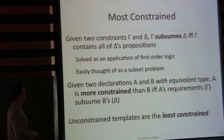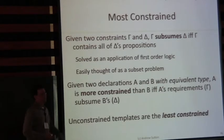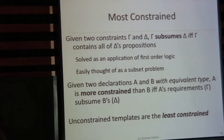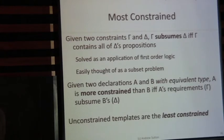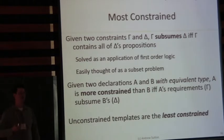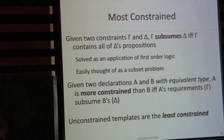We say gamma subsumes delta if and only if gamma contains all of delta's propositions. This is really an application of first-order — sorry, propositional — logic. You can really think of this as a subset problem: if there's no disjunction, it just is a subset problem. More broadly, if we have two declarations A and B with equivalent type, A is more constrained if its requirements gamma subsume those of B, delta. Unconstrained templates are always the least constrained, which is why requiring true gives you something more constrained than an unconstrained template.